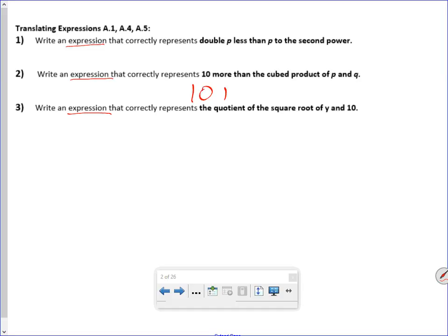So, ten more than the cubed product of p and q. The key thing is that you cube the product. So it's like this. Now, because we've learned our properties, we learned that addition is commutative, so order doesn't matter. So you could write this either way. Now, if we go back to the first one, p to the second power is going to be that. But we need double p less than that. So we need to take away 2p.